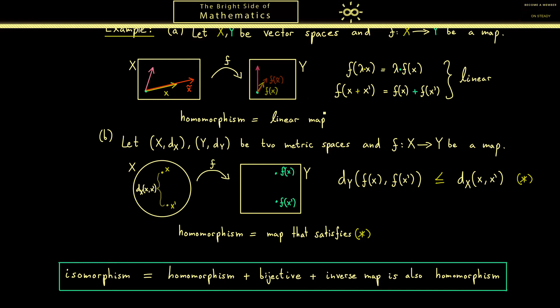Going back to the two examples we had before, we now know what an isomorphism is for vector spaces. It's just a bijective linear map because the inverse of a linear map is always linear. And for the metric spaces we have a map that is also bijective and it fulfills star but also needs to fulfill star in the other direction. Which means now we actually have the equality here. Hence having an isomorphism between two metric spaces means everything is preserved the one way and the other way. This then means that the metric spaces essentially look the same.